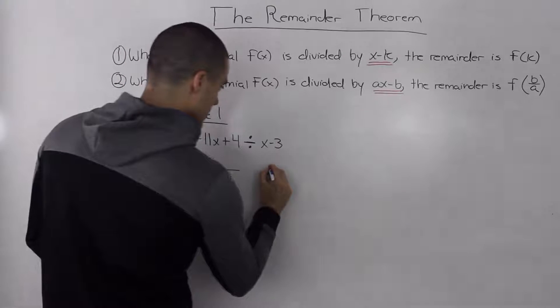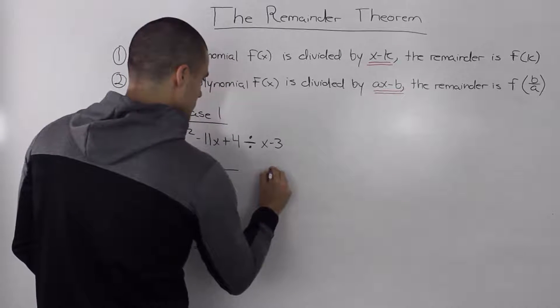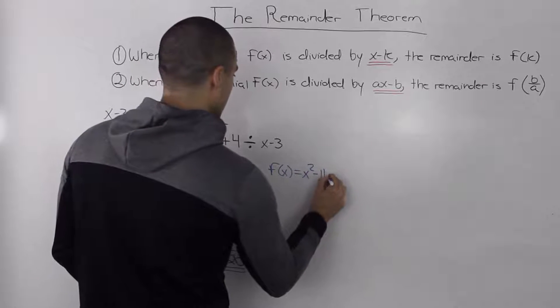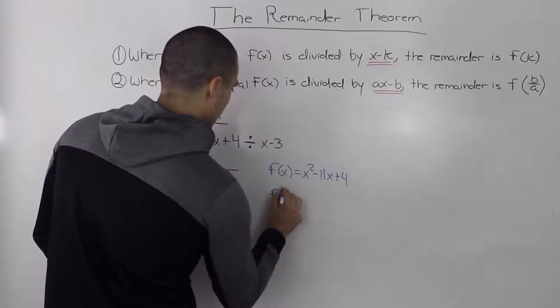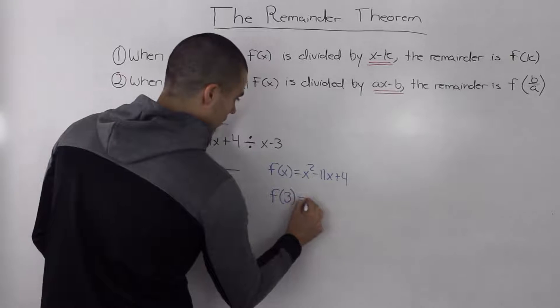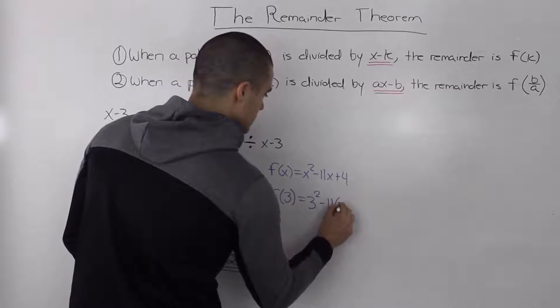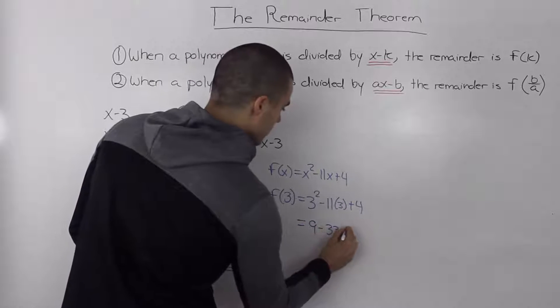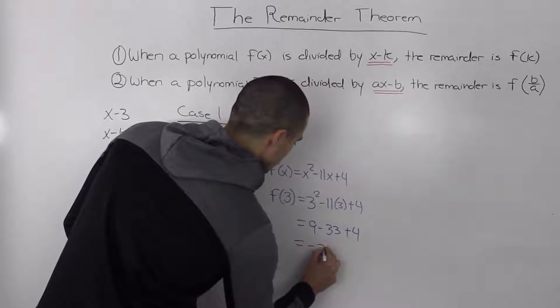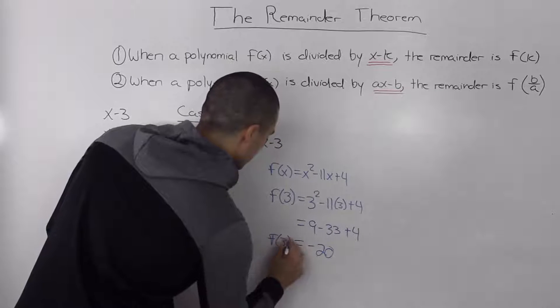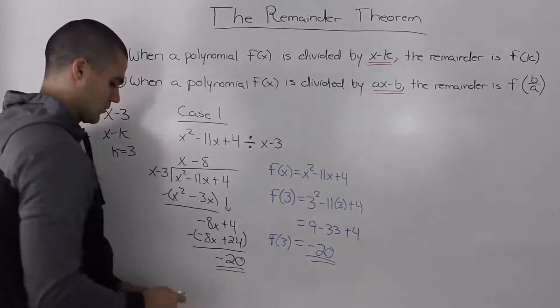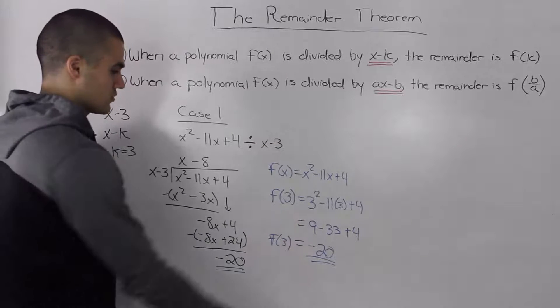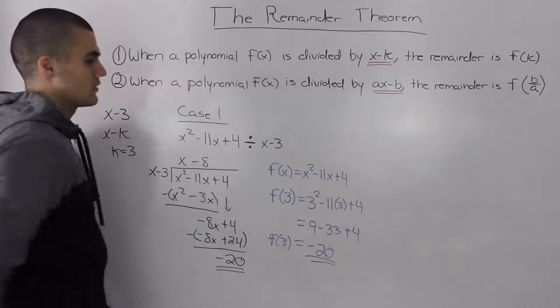So the polynomial we're dividing is x squared minus 11x plus 4. And let's plug in our k value of 3 and see what we get. 3 squared minus 11 times 3 plus 4. And then if you input this in your calculator, you'll get 9 minus 33 plus 4. And that will give you negative 20, which is the same answer that we got when we did the long division. As you can see, it's a much quicker and easier process to get the remainder of negative 20 by just using the remainder theorem.